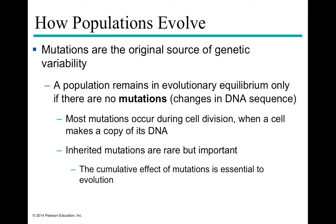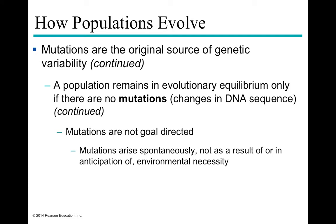Inherited mutations are very important because that's how we get all of the different alleles that have ever existed. The cumulative effect of mutations is essential to the evolution of one species into another, adding up from one generation to the next. Mutations are not goal-directed — they arise spontaneously, and oftentimes are deleterious to the individual. Every once in a while, something arises that happens to be beneficial in that specific selective environment, and it fits the environment and becomes more prevalent in the next generation.